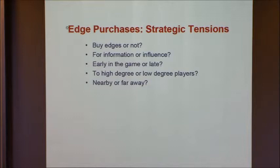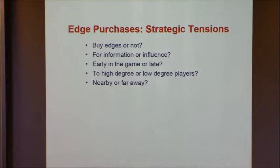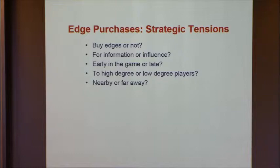This is a very complicated game — an asynchronous, multi-stage game of partial information. Even analyzing watered-down versions of this theoretically seems like a hopeless task. The strategic tensions in edge purchases include: at a minimum, collectively we need to purchase a spanning tree to be able to coordinate. But everyone would prefer that everybody else purchase the spanning tree and use it for free. Other questions: should I buy edges for information or influence? Should I do it early or late? Should I target low-degree players, near or far?